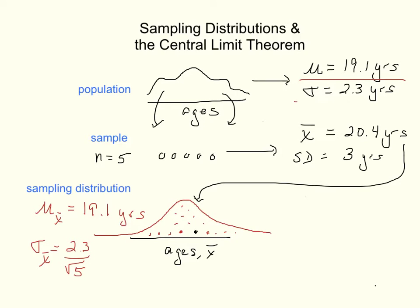Again, using the population's information and also, in this case, the sample size. So that number will be something smaller than 2.3. It may be around 1, for example.